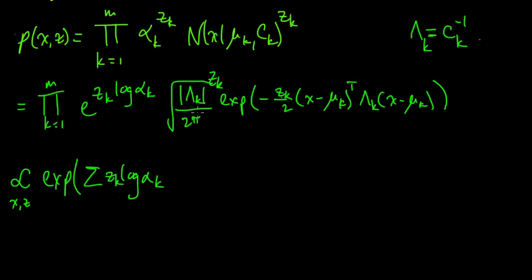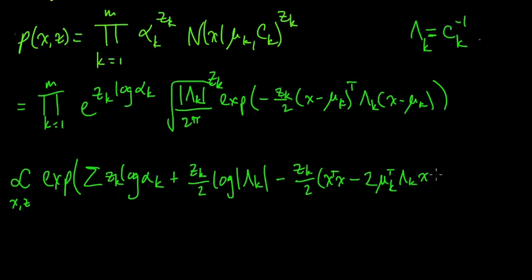Let's do this one here. This becomes 1/2, we move this into the exponent, we get z_k over 2 log determinant of lambda_k, minus z_k over 2. And let's go ahead and multiply this part out. This is x transpose x minus 2 mu_k transpose lambda_k x plus mu_k transpose mu_k, all of that stuff.